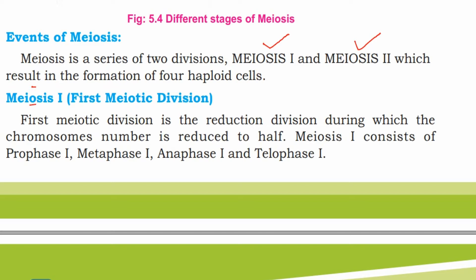The first meiotic division is the reduction division, during which the chromosome number is reduced to half. Meiosis 1 consists of prophase 1, metaphase 1, anaphase 1, and telophase 1.